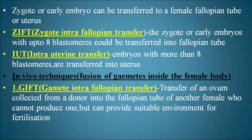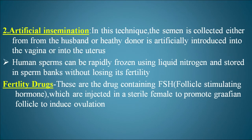In vivo techniques involve fusion of gametes inside the female body. The first is GIFT — gamete intrafallopian transfer — which involves transfer of an ovum collected from a donor into the fallopian tube of another female who cannot produce one but can provide a suitable environment for fertilization. Another technique is artificial insemination, in which semen collected from the husband or a healthy donor is artificially introduced into the vagina or uterus.